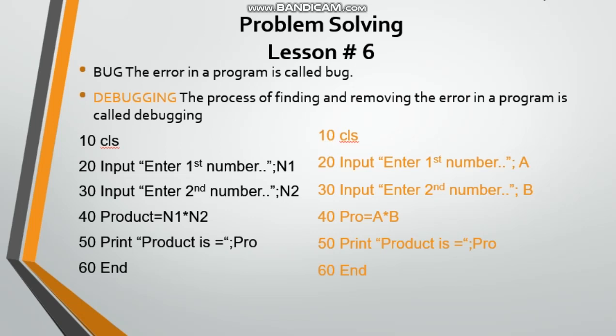So this was the difference between bug and debugging. Bug is an error, and debugging is when we remove the error and correct it.